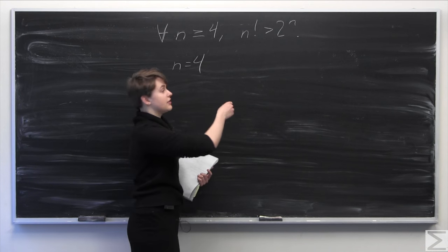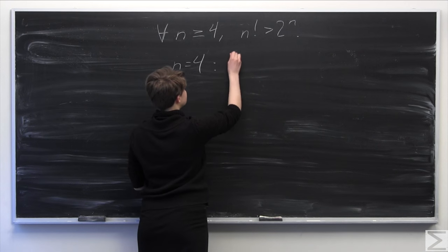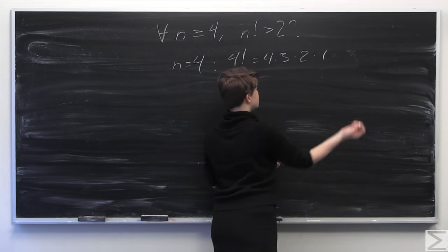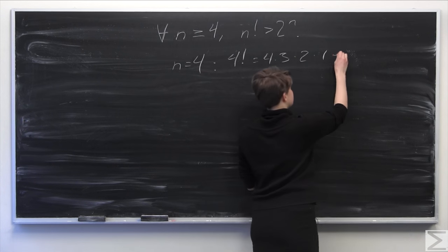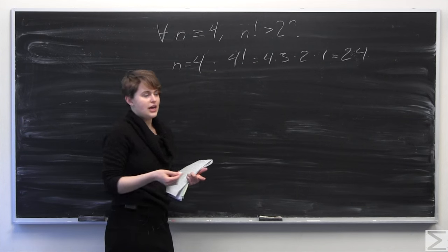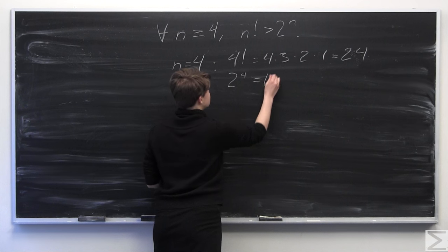we're going to plug in n right there. So n factorial is going to be 4 factorial, which equals 4 times 3 times 2 times 1. And if you do that algebra, this is equal to 24. Now we need to find 2 to the n. So 2 to the 4 is equal to 16,